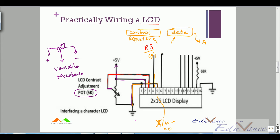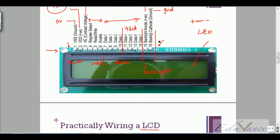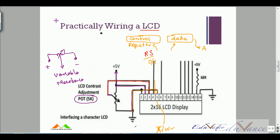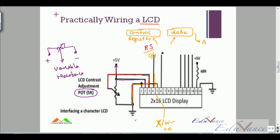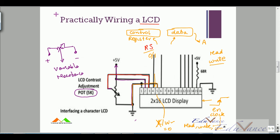Pin number six is the enable pin. Whenever I need to read or write data onto my LCD, my LCD must see a positive edge on the enable pin. It acts like a clock to the LCD — at the positive edge of pin six, my LCD understands that a read, write, or control instruction is to be performed.